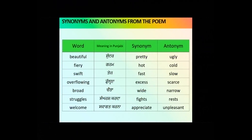Now let's look at synonyms and antonyms from the poem 'How Beautiful is the Rain.' The word is 'beautiful' — Punjabi meaning: sundar. Synonym in English: pretty. Antonym: ugly. Next word is 'fiery' — you can easily recognize 'fire' in it. Meaning in Punjabi: garam. Synonym: hot. Antonym: cold.